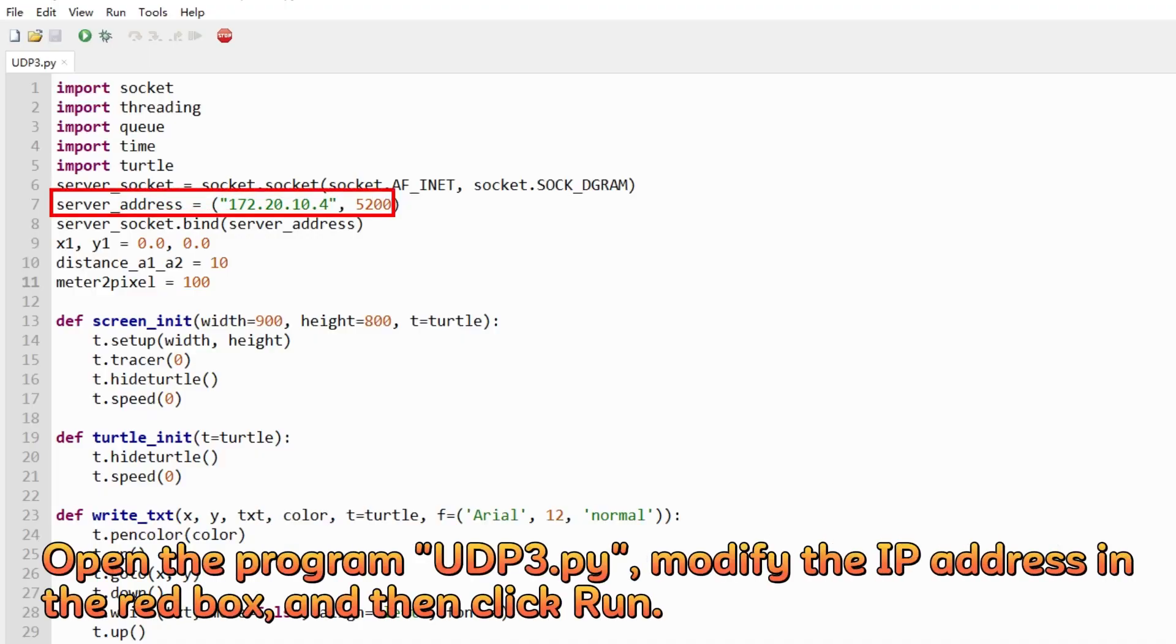Open the program udp3.py, modify the IP address in the red box, and then click run.